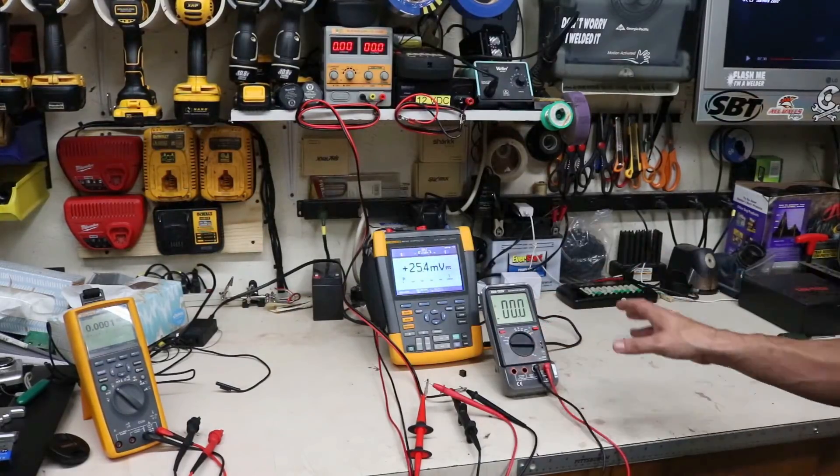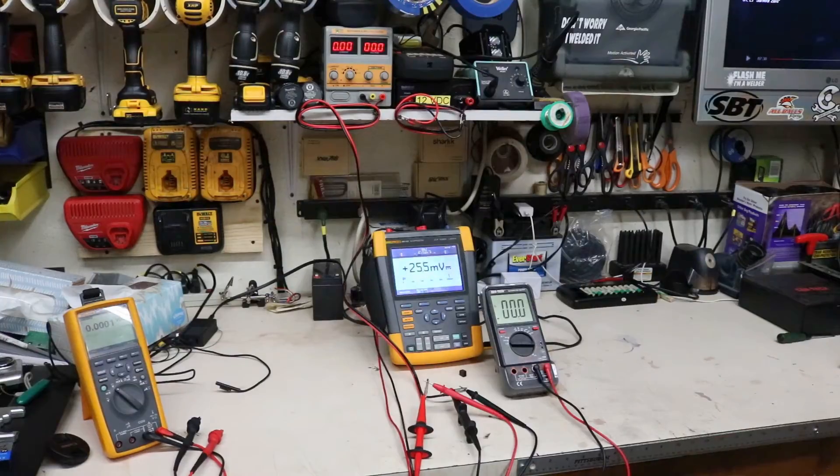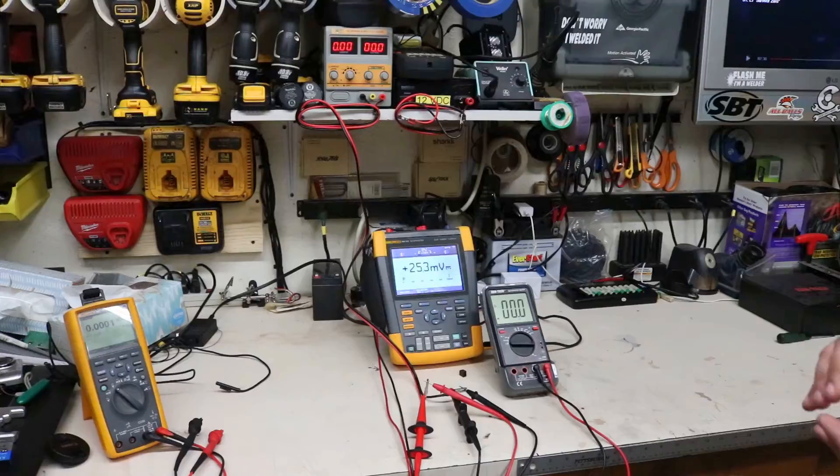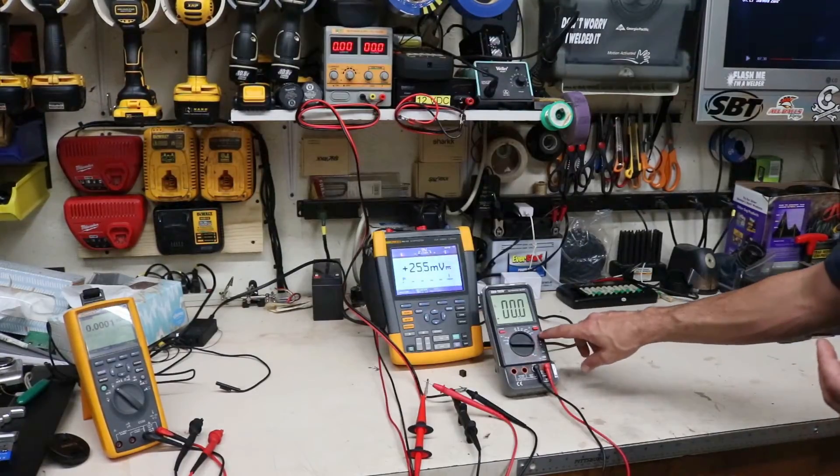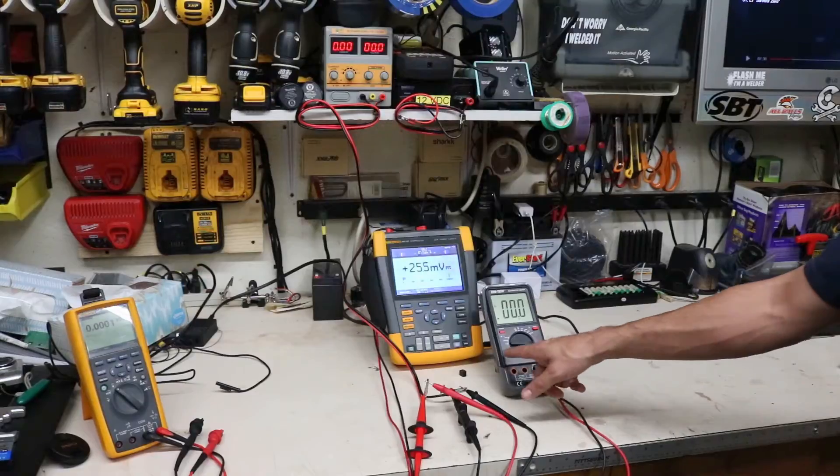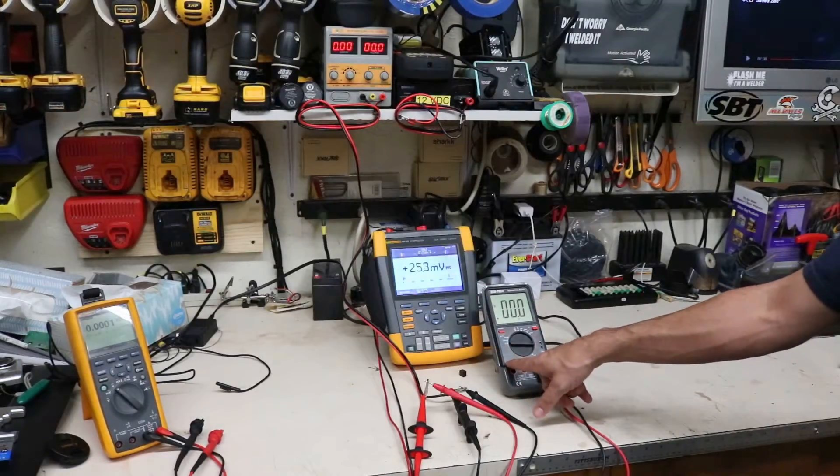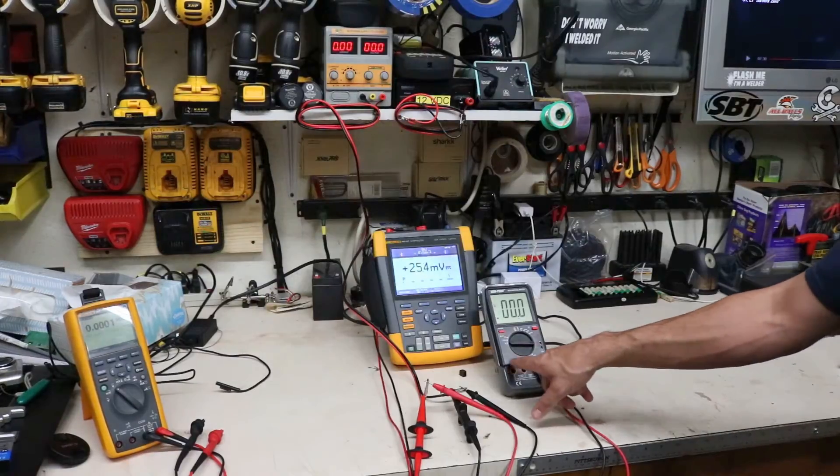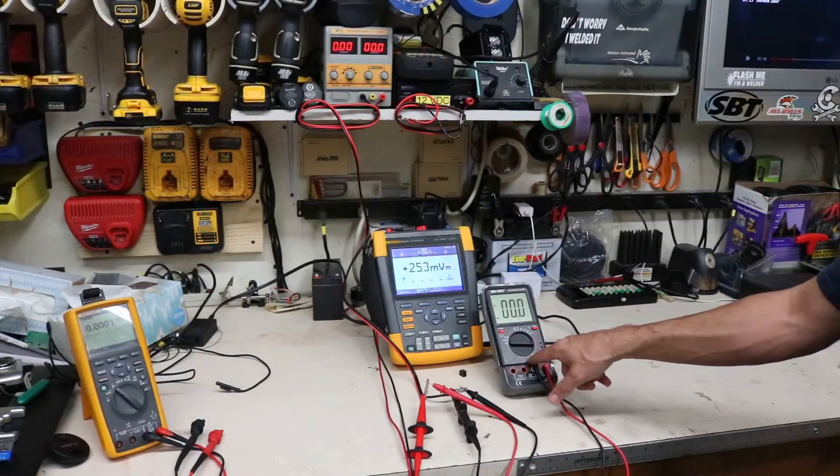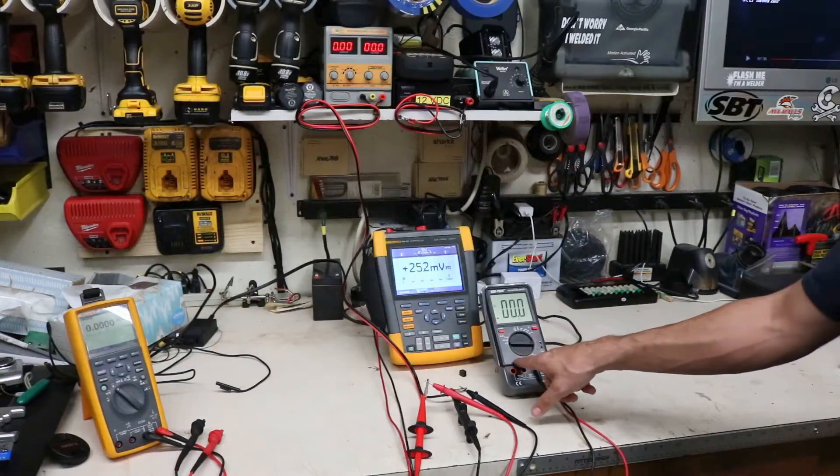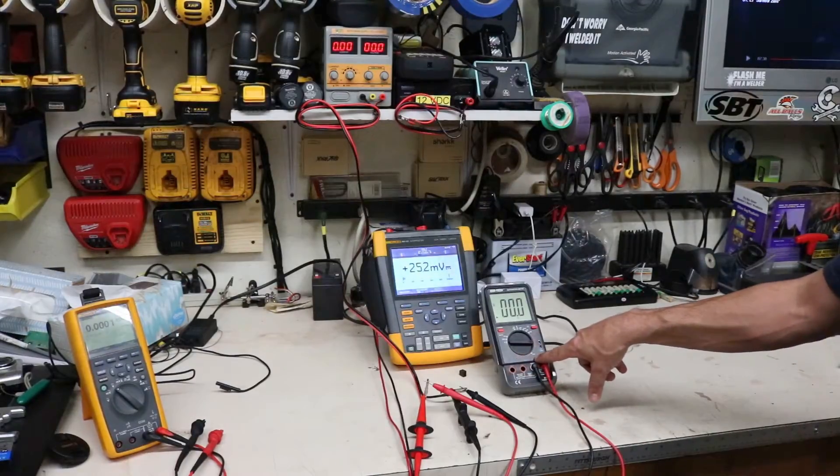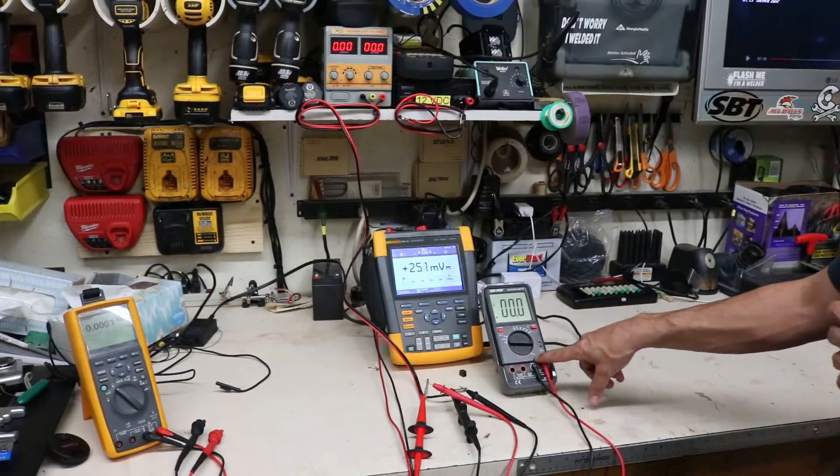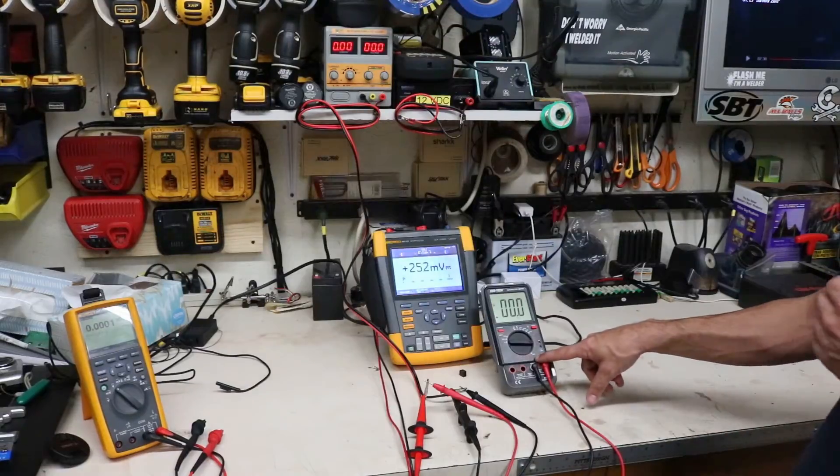Almost all meters or measuring devices, doesn't matter if it's voltage, amperage, temperature, they usually have some type of adjustment pot or trim pots. This meter here does volts AC and DC. It has a dwell function on it for working on motors, and it also has a tachometer with an inductive pickup that comes with this meter. It goes from 3-cylinder to 8-cylinder, so it allows you to see engine RPM on small engines all the way up to V8s.